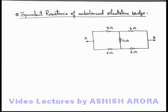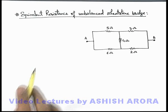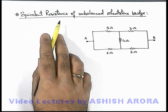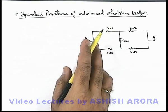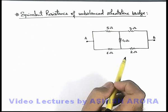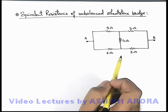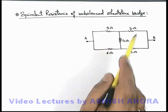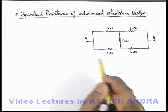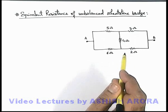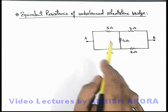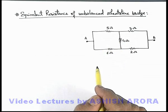Let us discuss an important analysis for calculation of equivalent resistance of an unbalanced Wheatstone bridge. In this circuit, it is a Wheatstone bridge in which the ratio of these two and these two resistances are not the same. That means it is an unbalanced Wheatstone bridge, and we cannot remove the middle branch for analysis of this circuit.